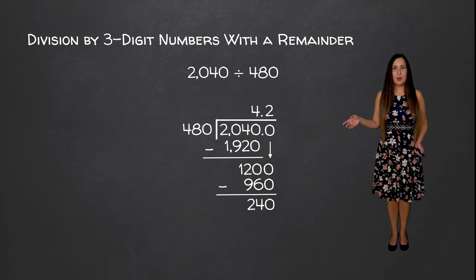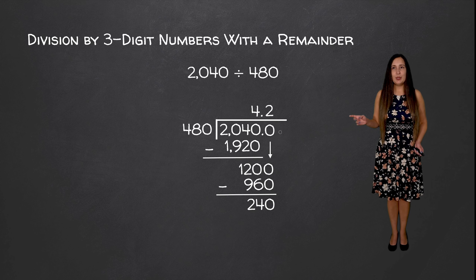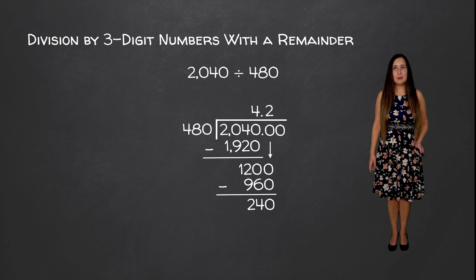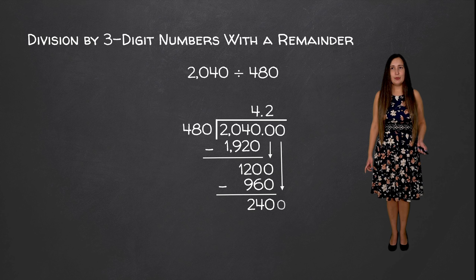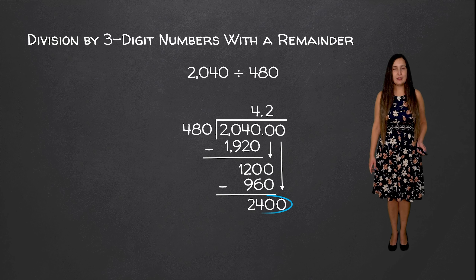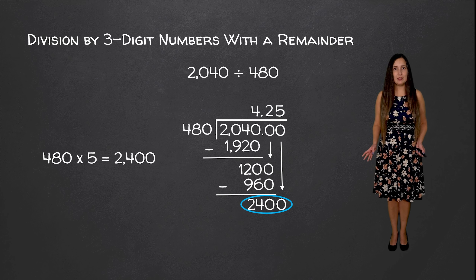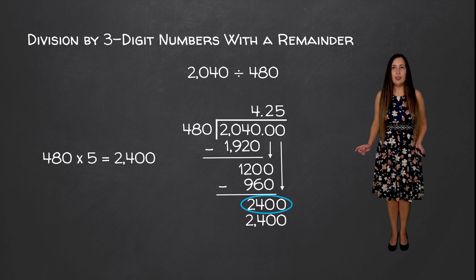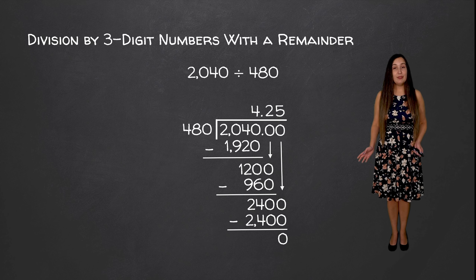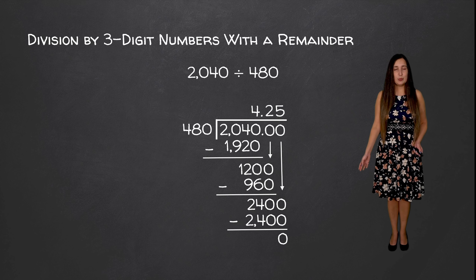So we're going to keep going at least to the thousandths place unless this decimal stops before then. We are going to add a zero and bring it down. Now we need to see how many times 480 goes into 2400. It goes in five times because 480 times 5 is equal to 2400. We write the value down, subtract, and we have no remainder. So we stop here — our decimal has stopped and the final answer is 4.25.